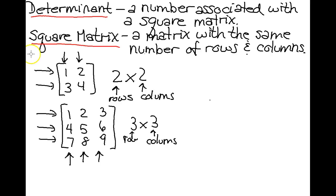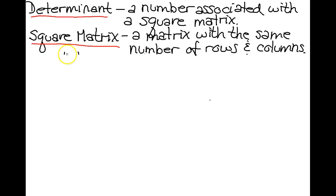So let's talk about the definition of how to take the determinant of a 2x2 matrix. So if you have a 2x2 matrix, A, B, C, D.